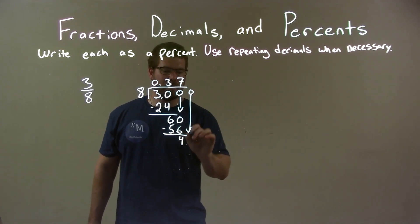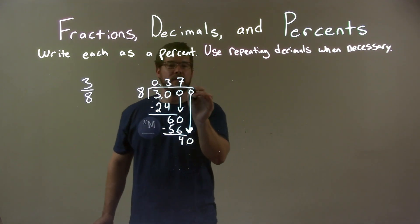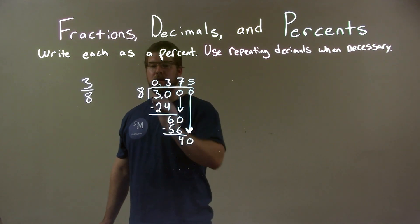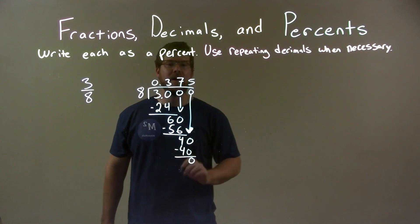We add another place value, bring down the zero. 40. Eight goes into 40 evenly five times. Five times eight is 40. We subtract them, 40 minus 40 is zero, and we're done.